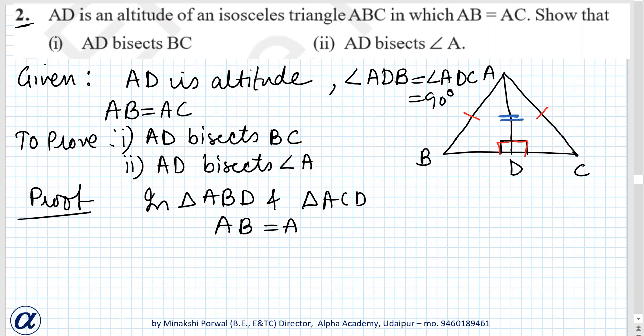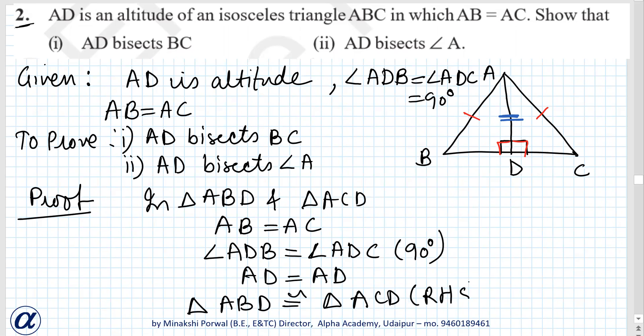Which congruence rule? It is RHS. Remember RHS. So triangle ABD is congruent to triangle ACD by RHS congruence rule.